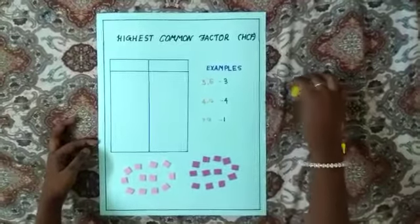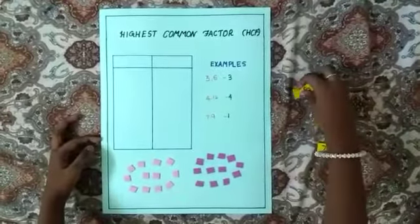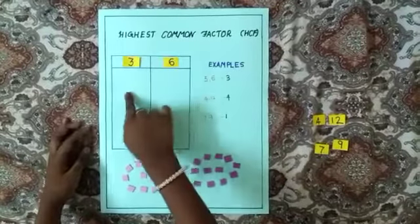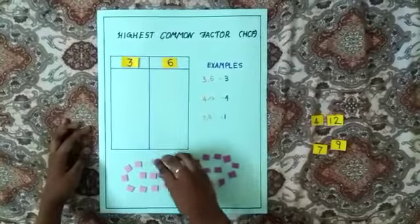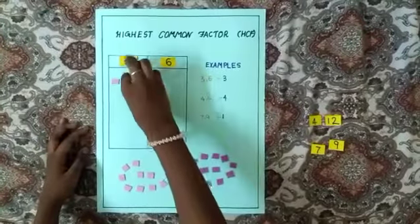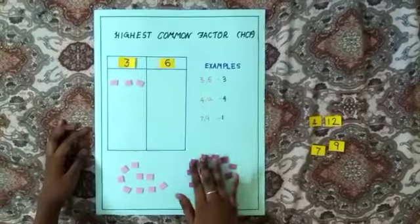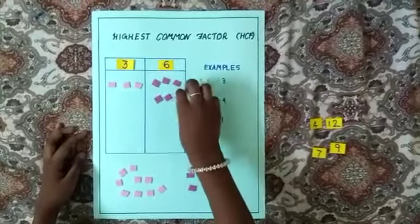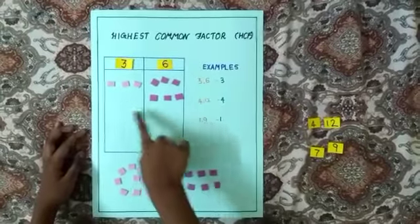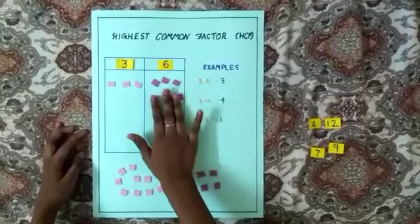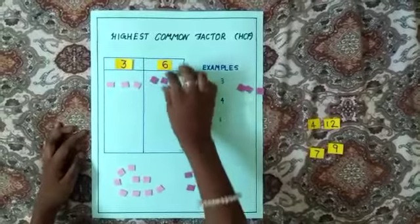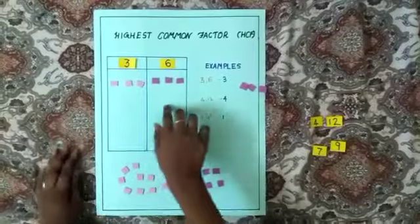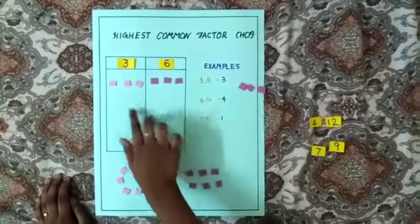First I am going to find the HCF of 3 and 6. Take 3 coins here and take 6 coins here. 3 is less than 6, so remove 3 coins here. Now in each box same. So the HCF of 3 and 6 is 3.